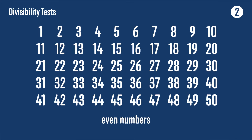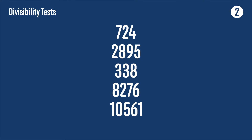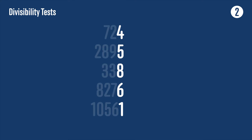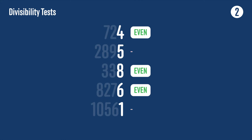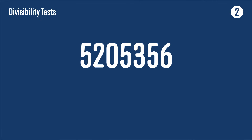Numbers that are divisible by 2 are just the even numbers: 2, 4, 6, 8, 10, 12 and so on. We can test if a number is divisible by 2 by looking at its last digit. If the last digit is even — that is, if it's 0, 2, 4, 6 or 8 — then the number is even, and if not it isn't. They're like shortcuts. We can look at a large number like 5,205,356 and immediately know it's even because its last digit is even.